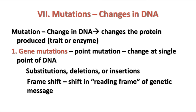Point mutations include three different kinds: substitutions, insertions, and deletions. A substitution would just substitute one base for another, and that may or may not change what is coded for, as we've learned from reading the genetic code. There are multiple codons for various amino acids, and most of the time they're just different by one base. So sometimes changing a single base isn't going to change the amino acid coded for, which won't change the protein at all.